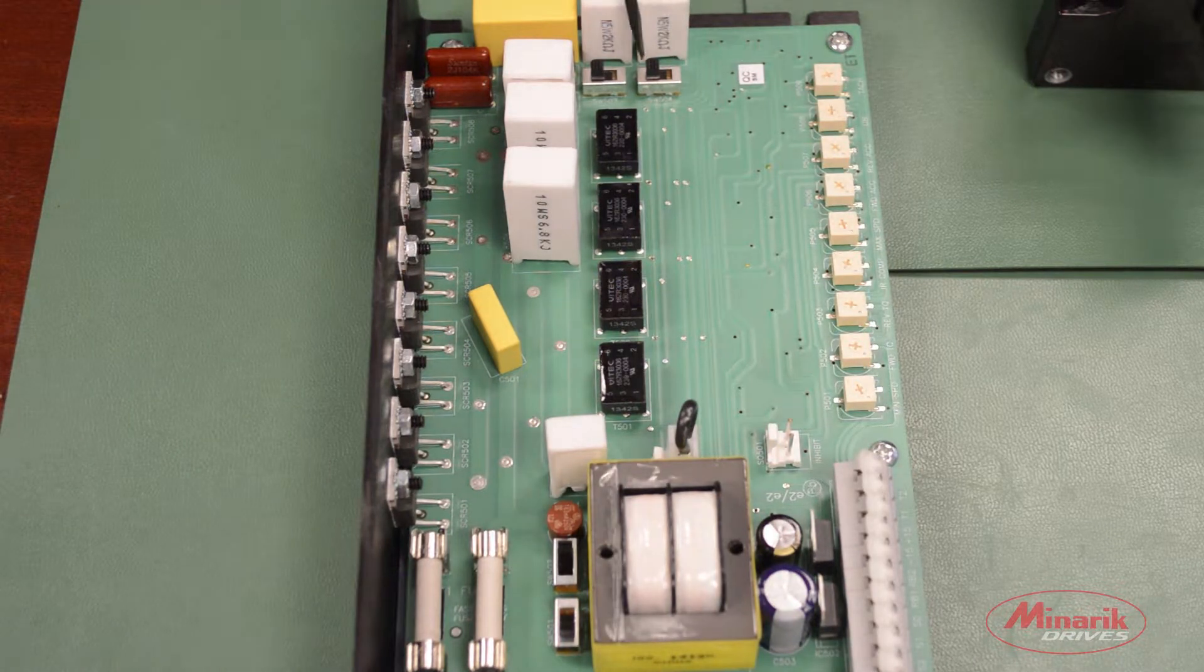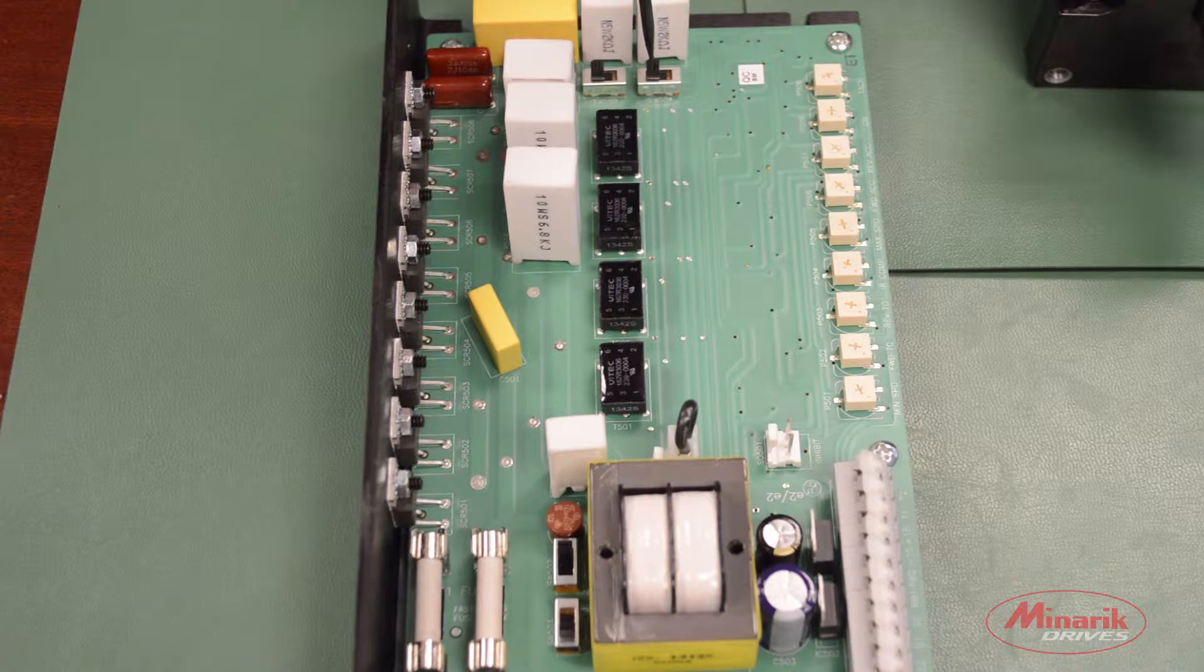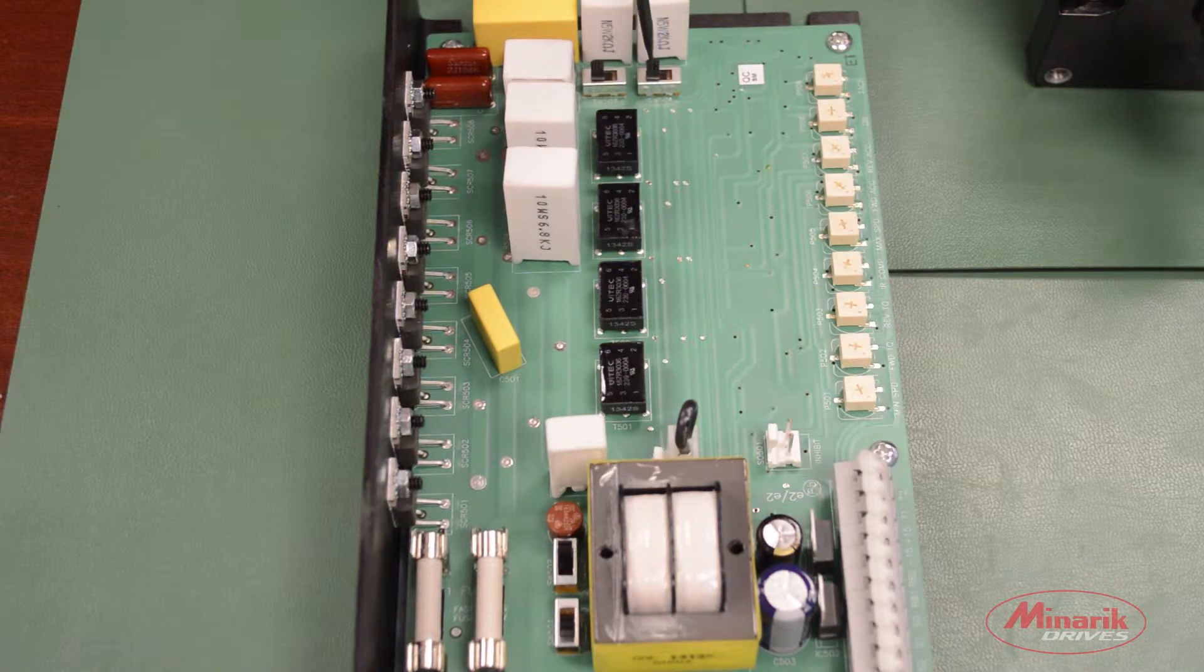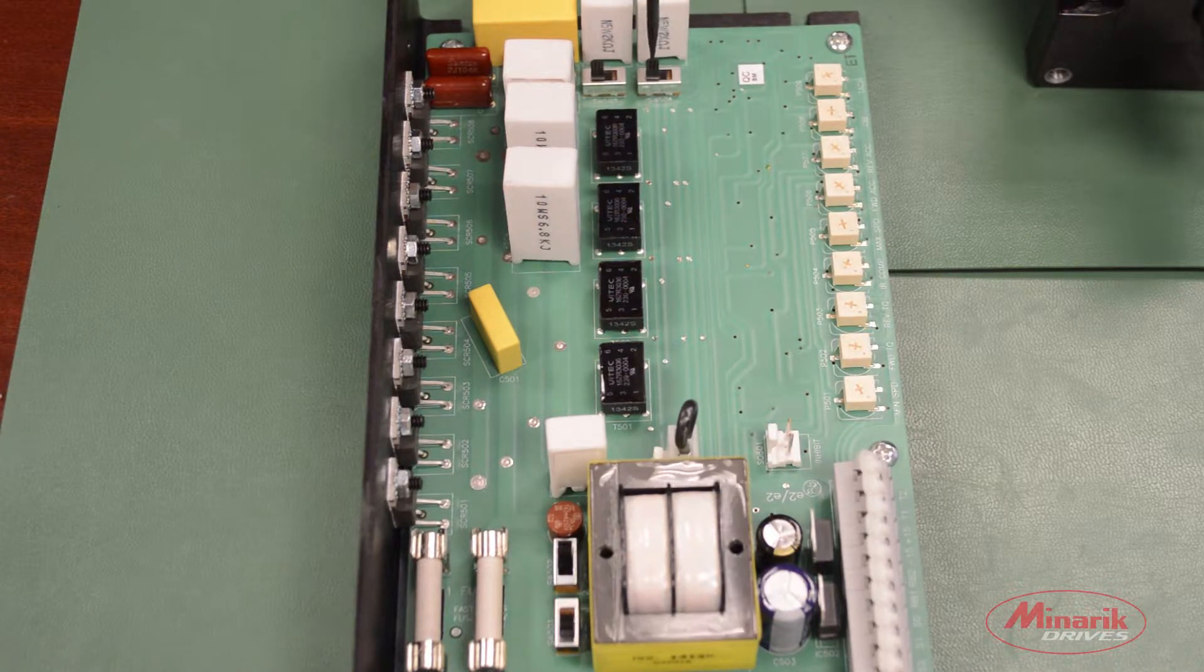The last switch to look at is the feedback switch. This sets whether you're using tack feedback or armature feedback. We're not going to be using tack feedback so we'll make sure that the switch is located in the armature feedback position which is the factory default position.